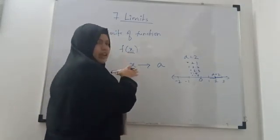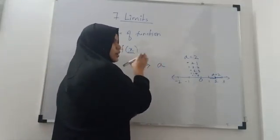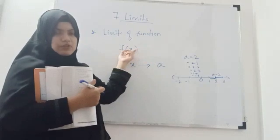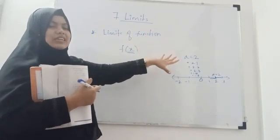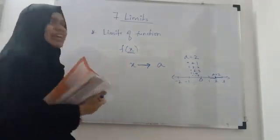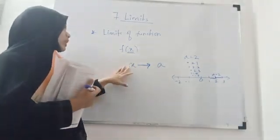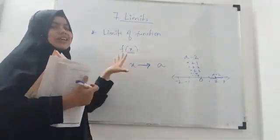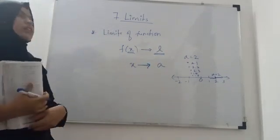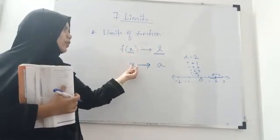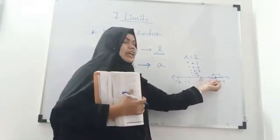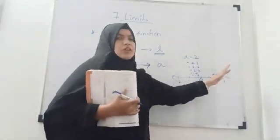We are taking values for x which are closer to a but not exactly equal to a. For those values, we will find out the value of the function. That value will be considered as the limit of that function. This notation is called x tends to a — whenever x approaches a, your function will tend to some value.